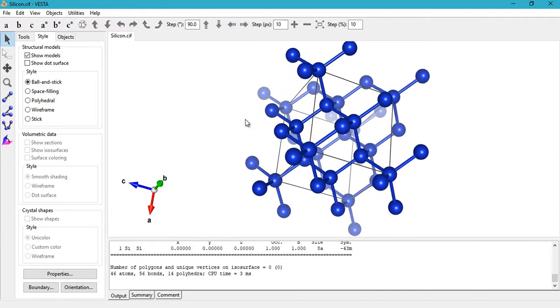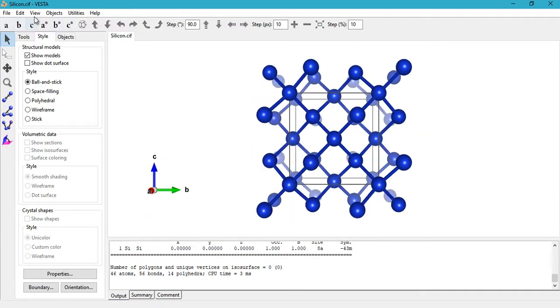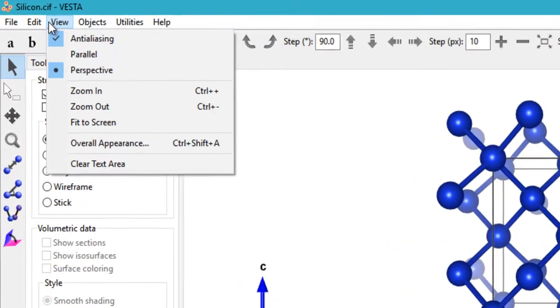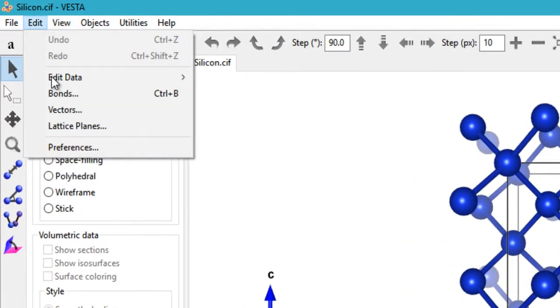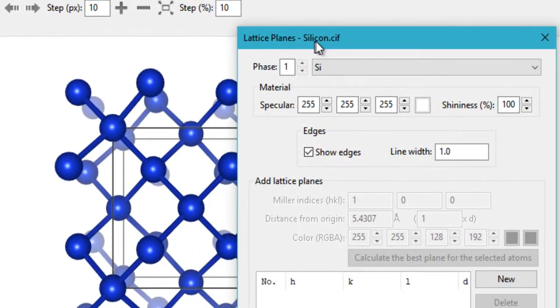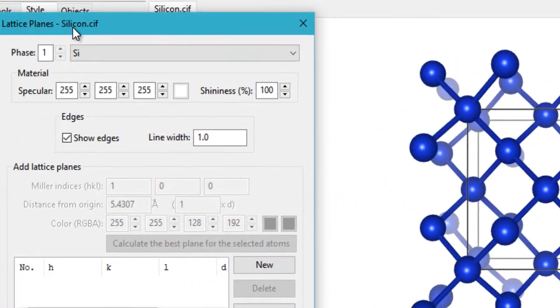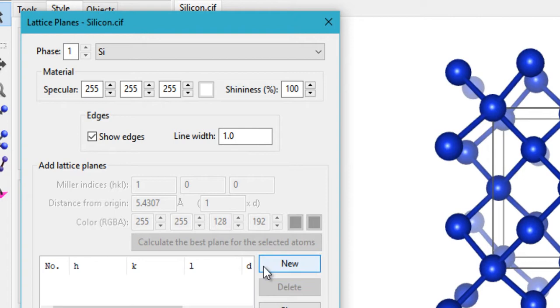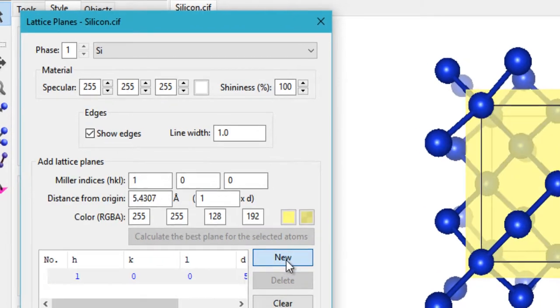In order to visualize the lattice planes, click on Edit and then click on Lattice Planes. Here you can enter the information about visualizing the plane that you want. Just go ahead and click New.